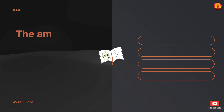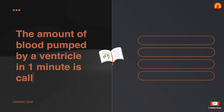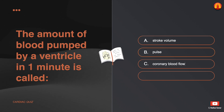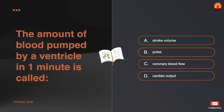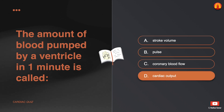The amount of blood pumped by a ventricle in one minute is called: A. Stroke volume. B. Pulse. C. Coronary blood flow. D. Cardiac output. The correct answer is: cardiac output.